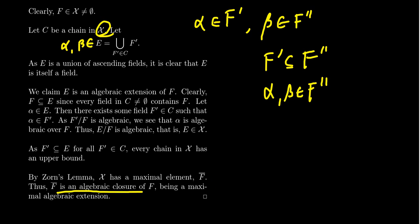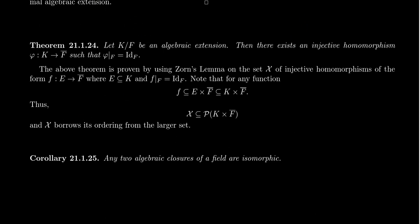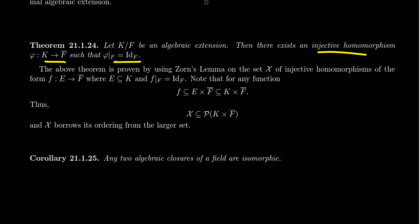The next result, which ends Lecture 27, is that algebraic closures of a field are isomorphic. To prove this corollary, we first prove the following theorem: let K be an algebraic extension of F. Then there exists an injective homomorphism phi from K into F-bar — an algebraic closure of F — such that phi restricted to the base field F is the identity map. So given any algebraic extension of F, there is an embedding of it inside an algebraic closure that fixes the base field. Every algebraic extension can be placed inside of an algebraic closure.